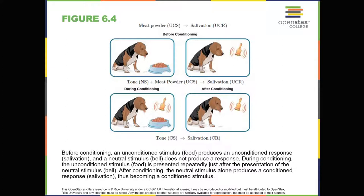In classical conditioning, a neutral stimulus is presented immediately before an unconditioned stimulus. Pavlov would sound a tone, like ringing a bell, and then give the dogs the meat powder. The tone was the neutral stimulus, or NS — a stimulus that does not naturally elicit a response. Prior to conditioning, the dogs did not salivate when they just heard the tone, because the tone had no association for the dogs. Simply put, tone (neutral stimulus) plus meat powder (unconditioned stimulus) leads to salivation (unconditioned response).